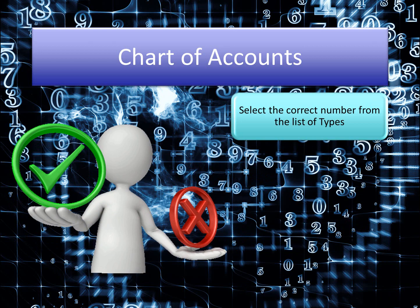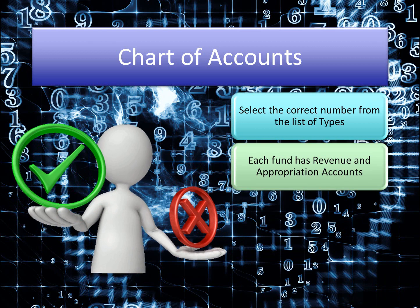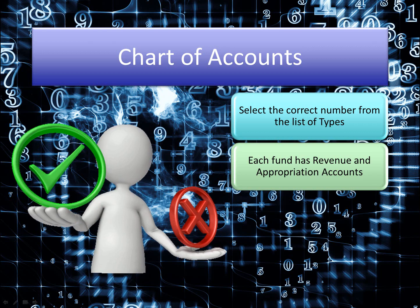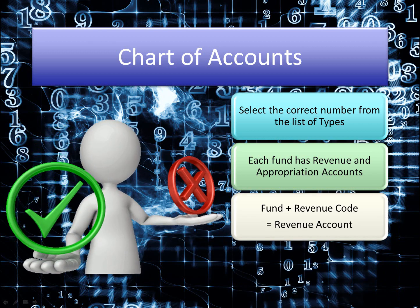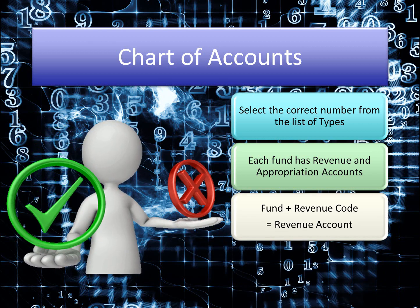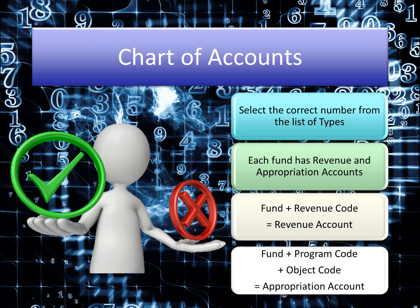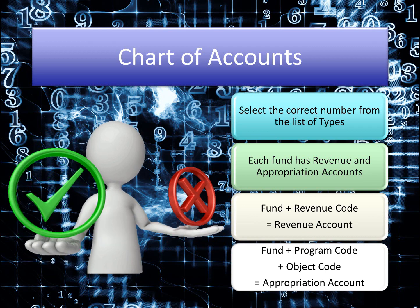This is where most fiscal officers go wrong when selecting a fund or account. We know that each fund has its own set of revenue and appropriation accounts. The combination of fund and revenue code is a revenue account. And the combination of fund, program, and object code make up an appropriation account.